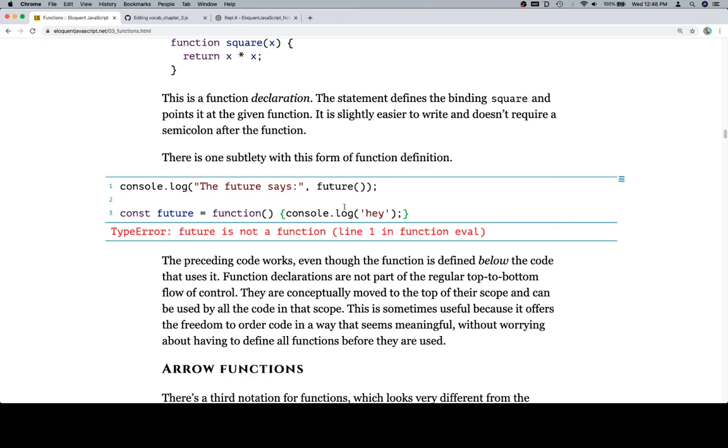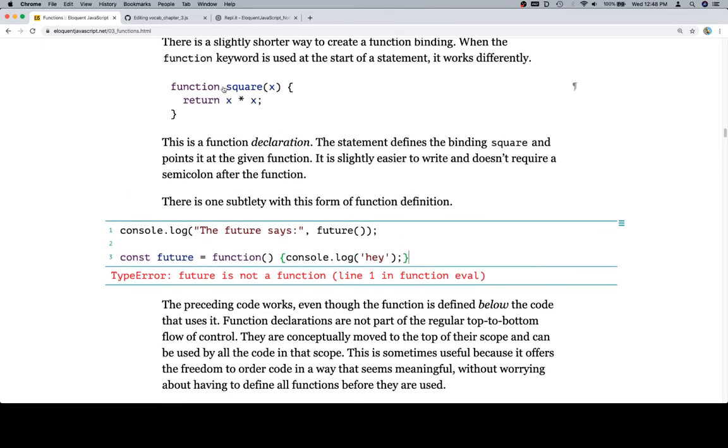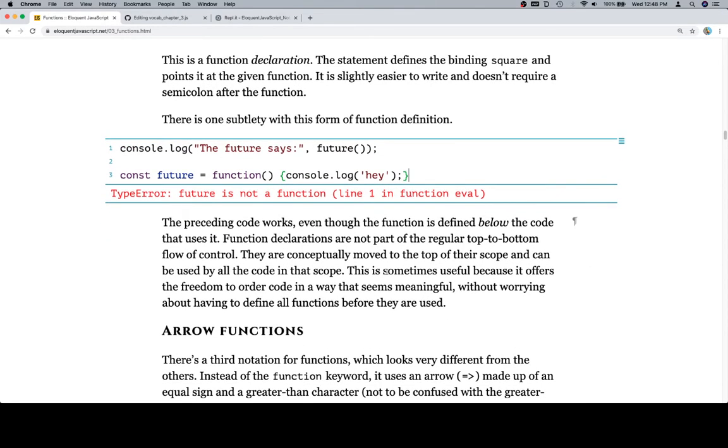Because that hoisting thing we discussed a moment ago, where function declarations are essentially hoisted to the top of your current scope, variables are hoisted next. But not their actual assignment. It's just the presence of that value. You see that we don't get future is undefined. We get it's not a function. And that's because it's essentially, okay, so I have a const called future. I'm not sure what it's going to be, but I'm just going to save that. So their conception moves to the top of the scope.